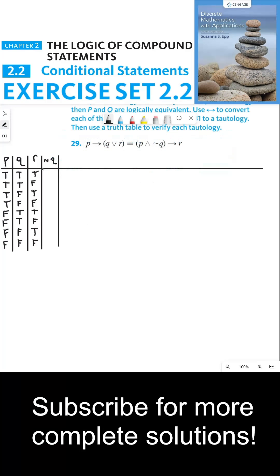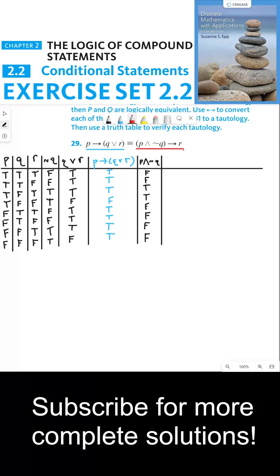We'll start by building not Q. Then we need to find the truth values for Q or R. This implication is false precisely when the if part is true and the then part is false, which is only the case in the fourth row. Then we can identify the truth values for P and not Q. Next, we can build this red statement form here. This implication is false precisely when column 7 is true and column 3 is false, which is only the case in the fourth row.